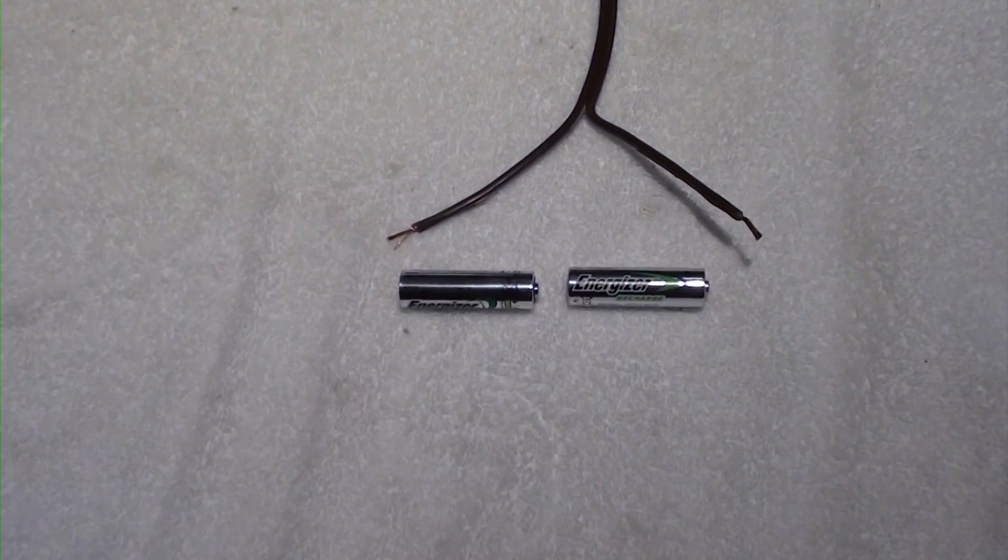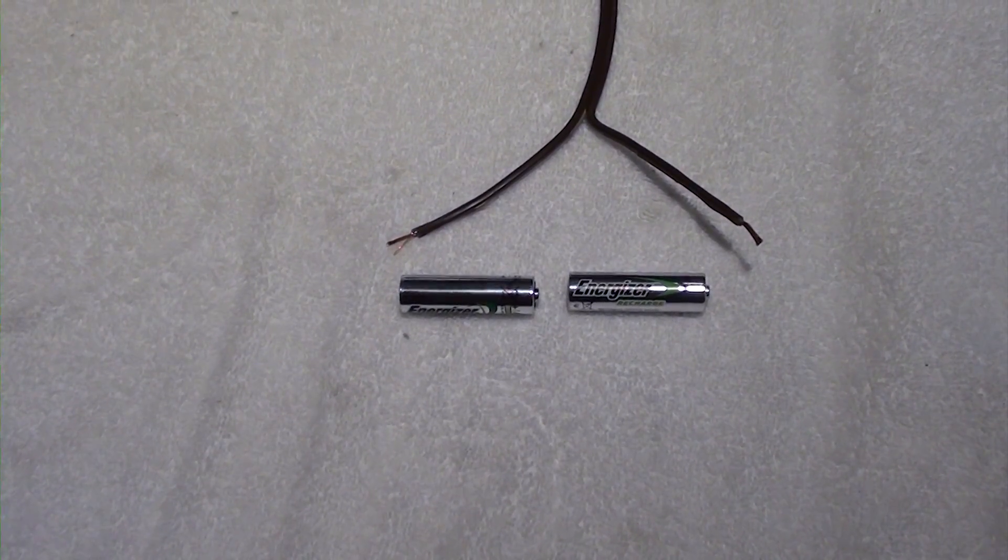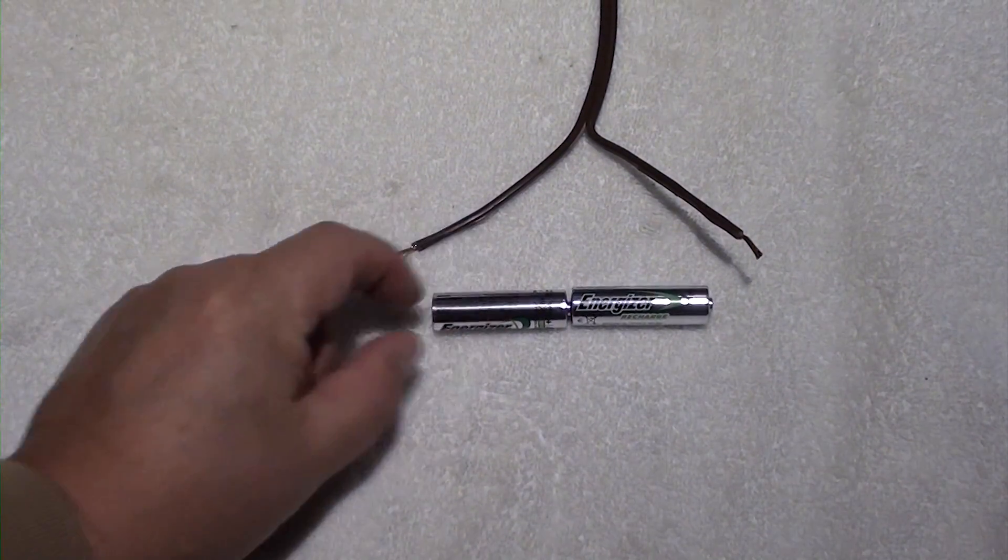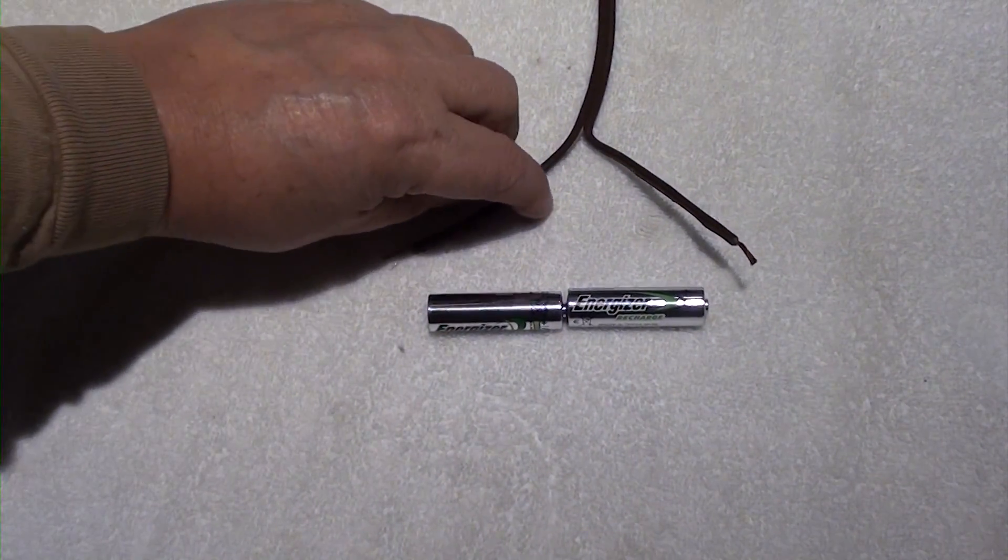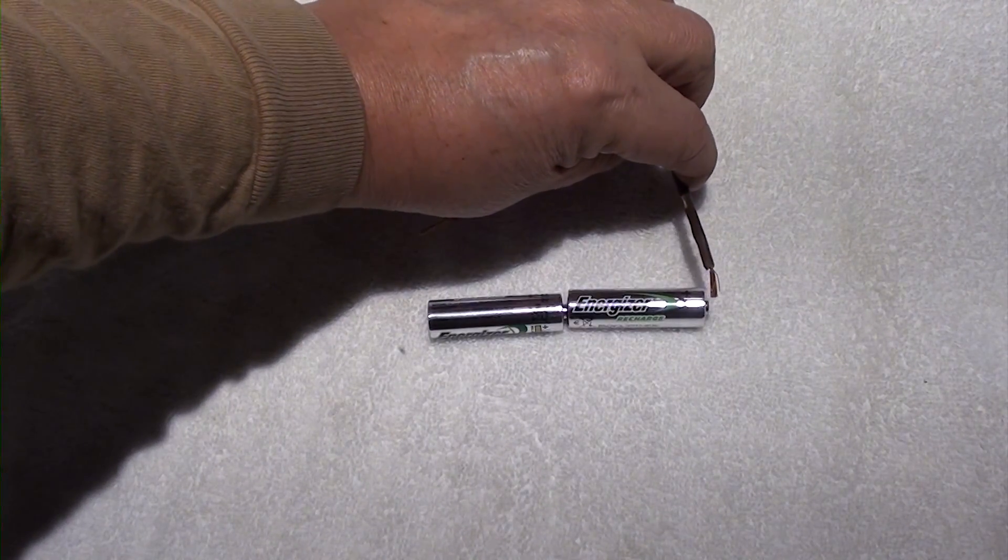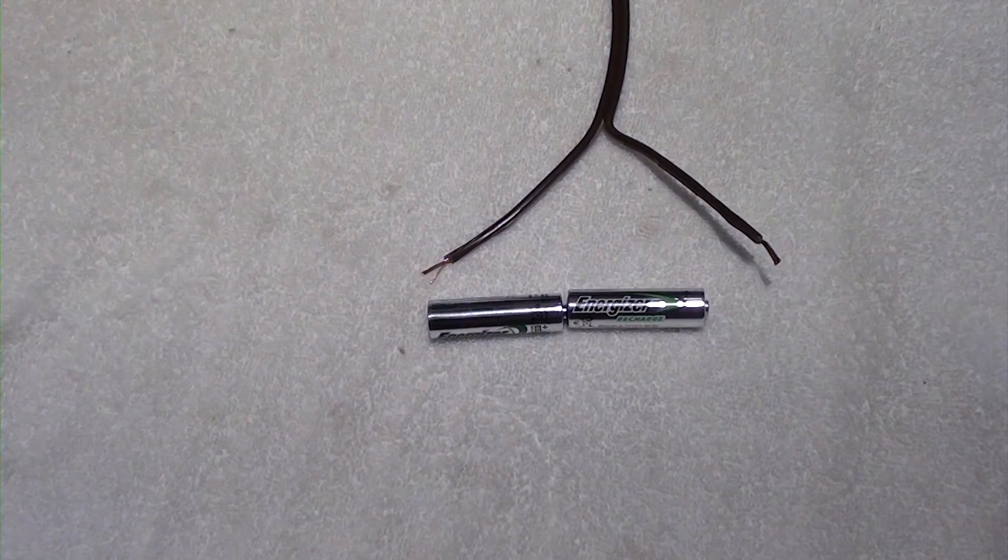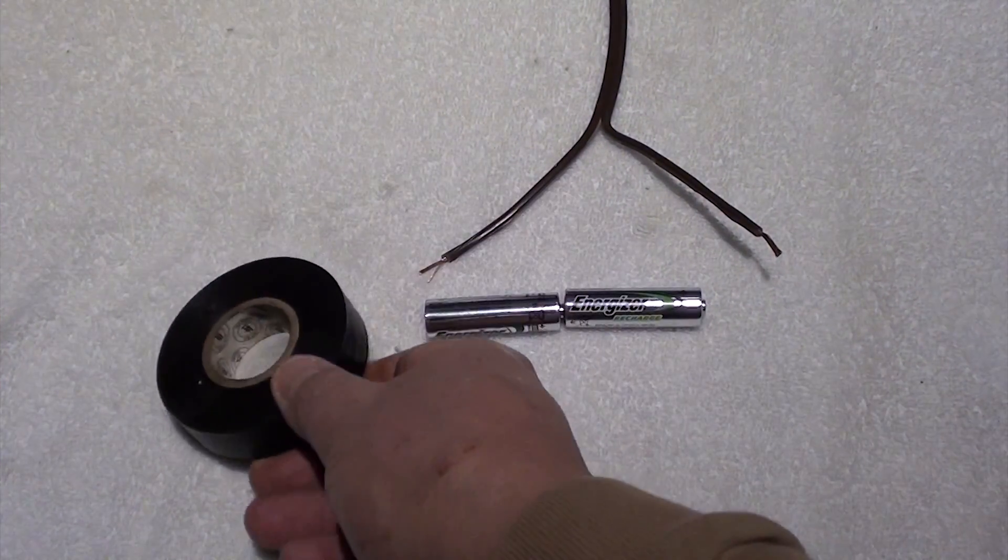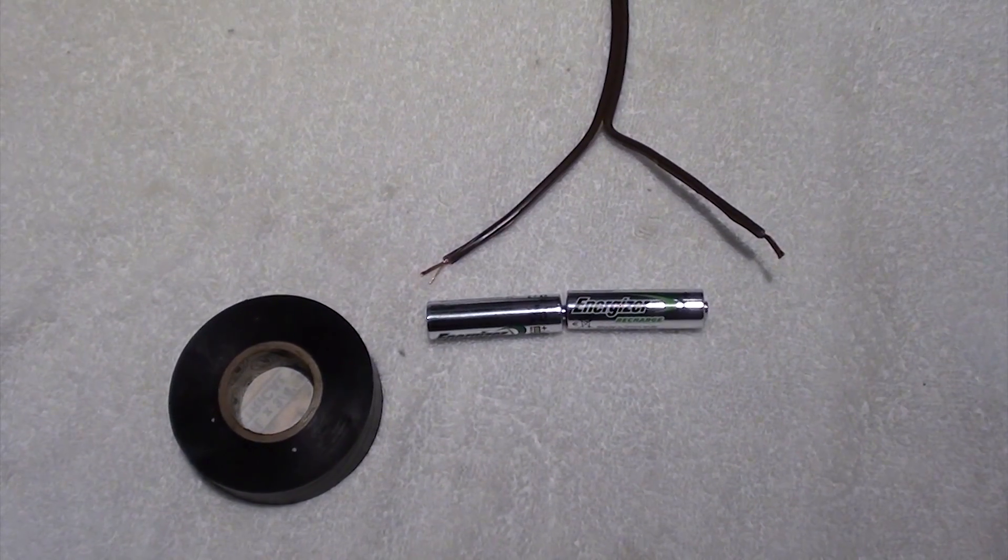Next you're going to need two fully charged batteries. You're going to take the two fully charged batteries and connect them together like you would if you were to put them in a flashlight. Take one wire and connect it to the negative side of the battery, and take the other wire and connect it to the positive side. Now they make a little tray that you could do this, but since I don't have a tray I'm going to use electrical tape.